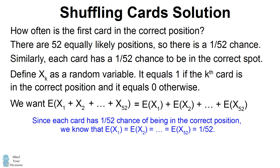Well, we just reasoned that each card has a 1 in 52 chance of being in the correct position. So we figured out that the expectation of each different variable is equal to 1 divided by 52.